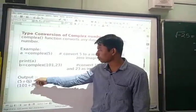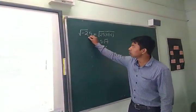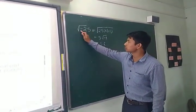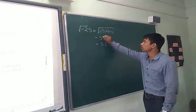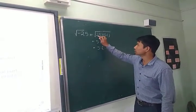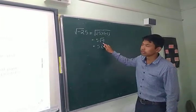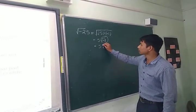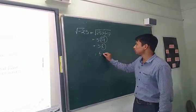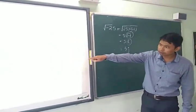Now, how is the imaginary part calculated? Suppose we have the square root of minus 25. Since we can't find the root of a negative value, we rewrite it as 25 times minus 1. The square root of 25 is 5, and the square root of minus 1 is written as 'i' in mathematics, but in Python we use 'j'. So the result is 5j.